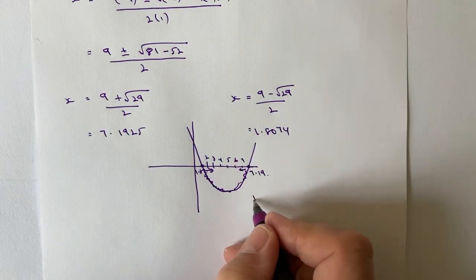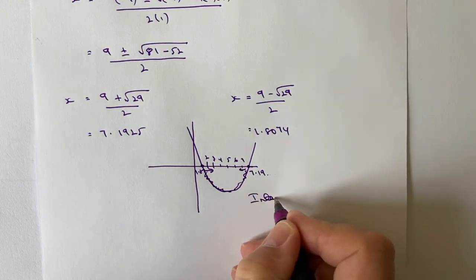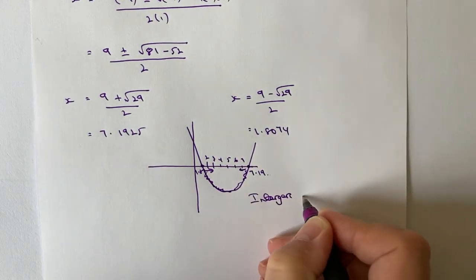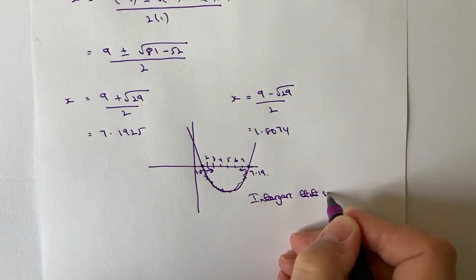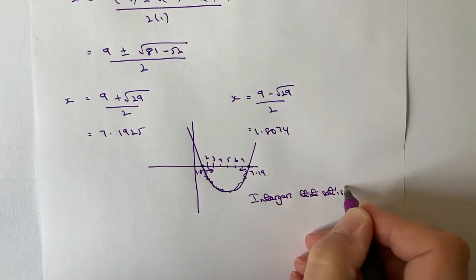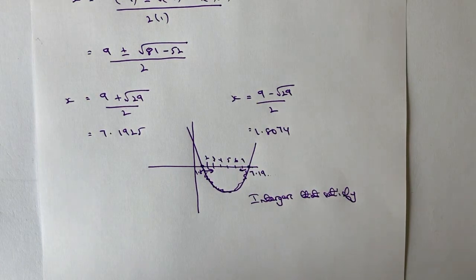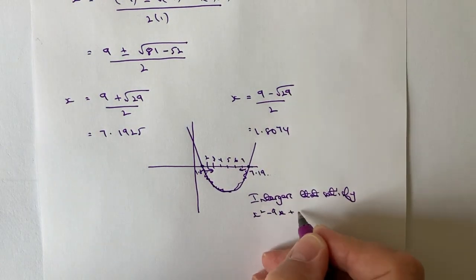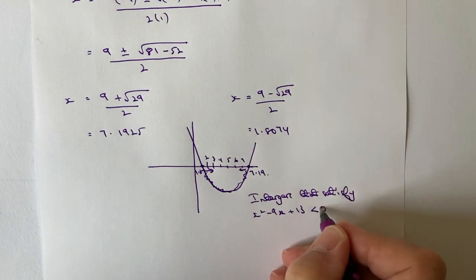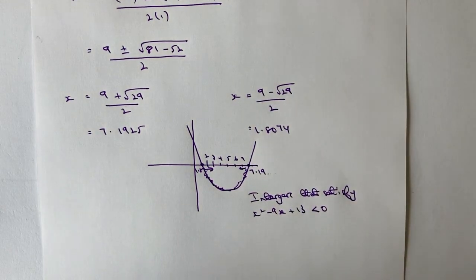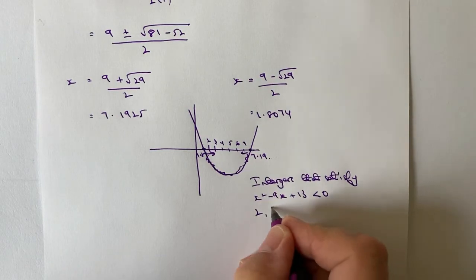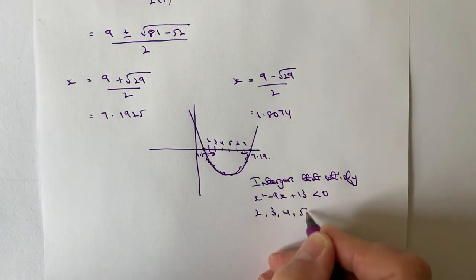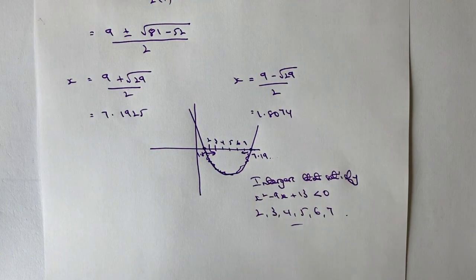I can write that out as integers that satisfy x squared minus 9x plus 13 is less than 0, and those integers are 2, 3, 4, 5, 6, and 7. That would be the answer to that particular question.